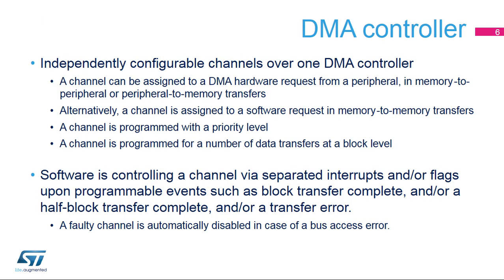Each channel of the DMA controller is independently configurable. A channel can be assigned to a DMA hardware request from a peripheral, in peripheral-to-memory or memory-to-peripheral data transfers. Alternatively, a channel is assigned to a software request in memory-to-memory data transfers. A channel is programmed with a priority level, and a channel is programmed for a number of data transfers at a block level.